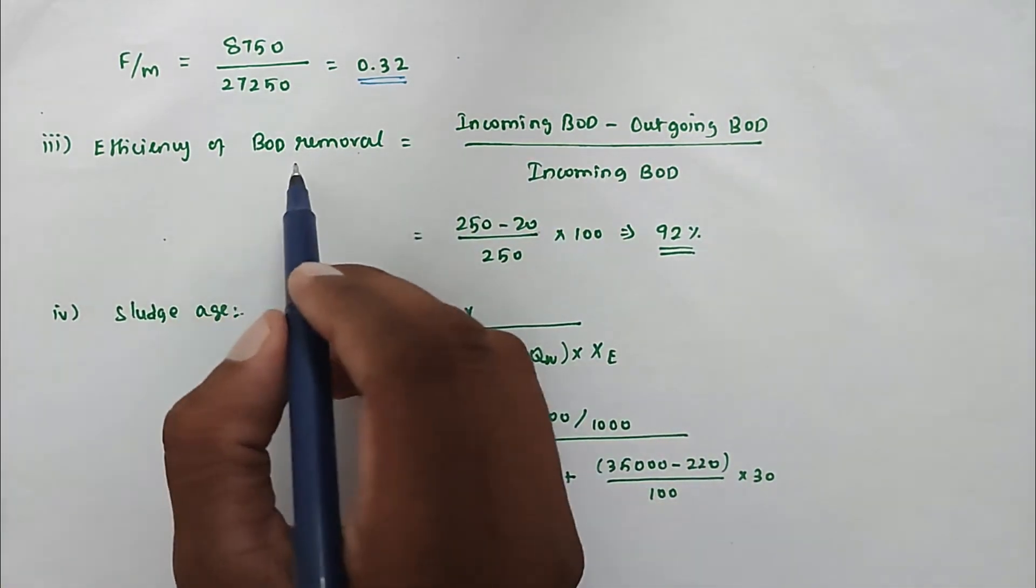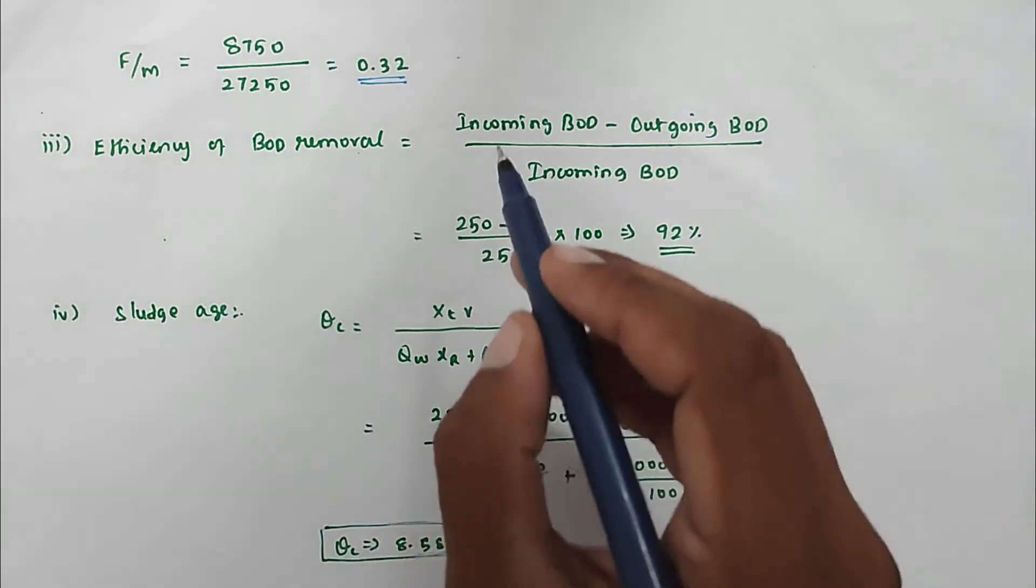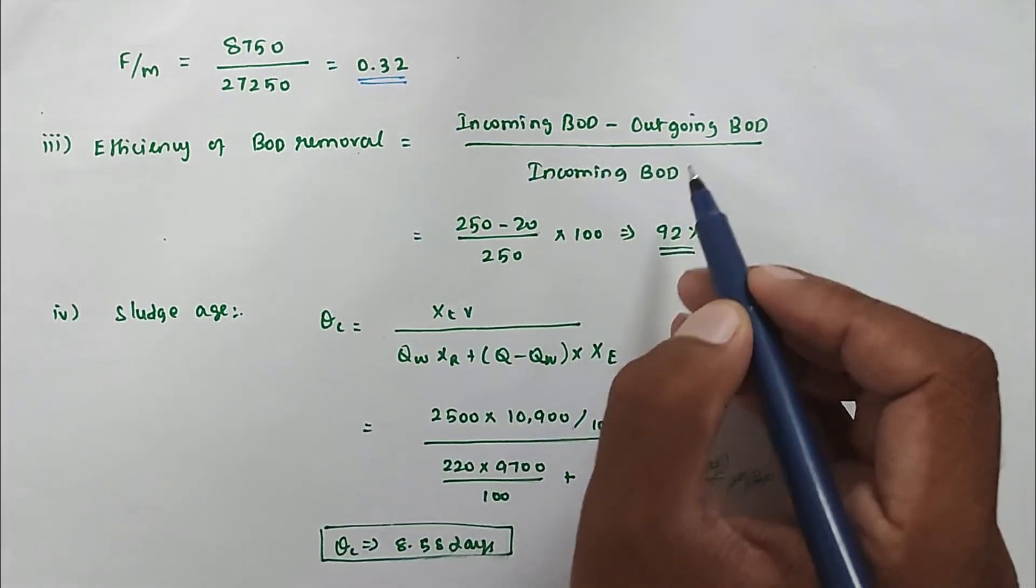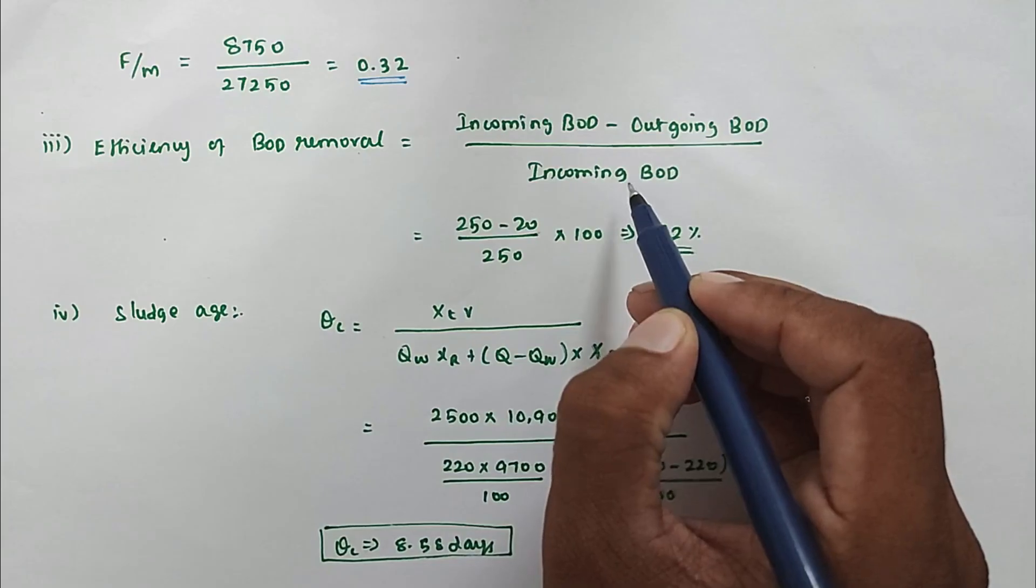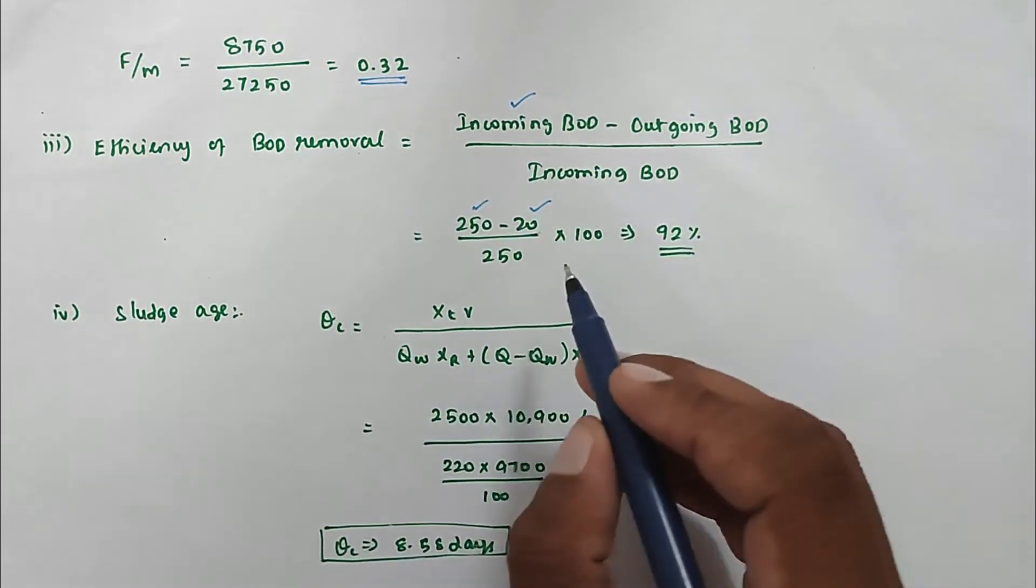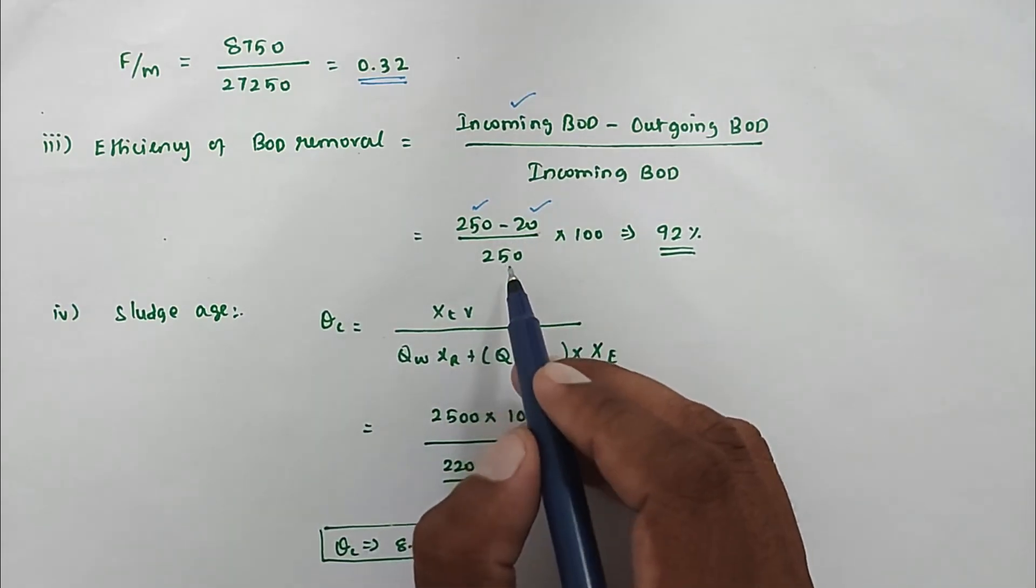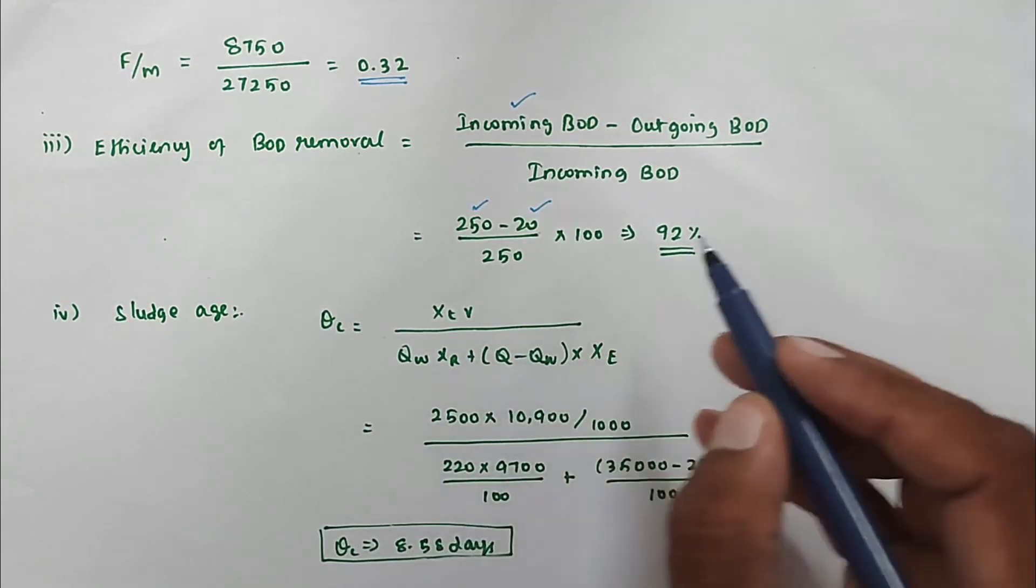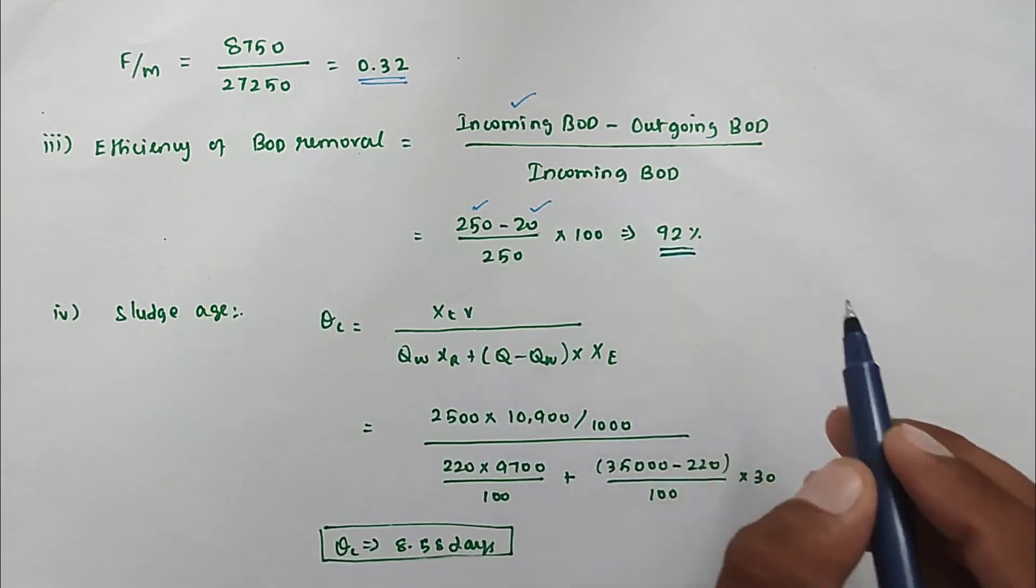Third question: efficiency of BOD removal. The formula is incoming BOD minus outgoing BOD divided by incoming BOD. Incoming BOD is 250 and outgoing BOD is 20. So 250 minus 20 divided by 250 times 100, we got the value of 92 percent.